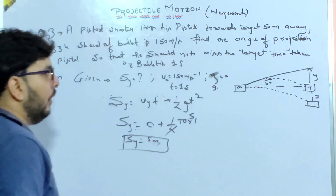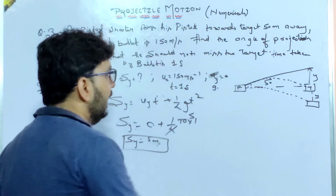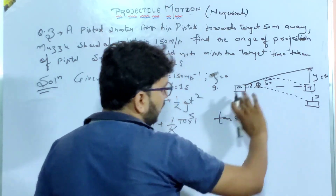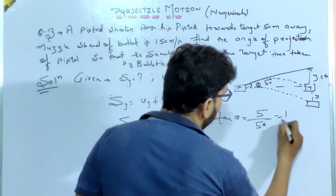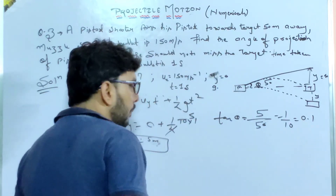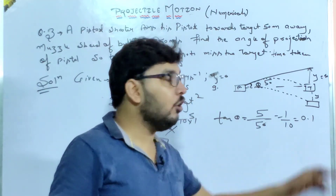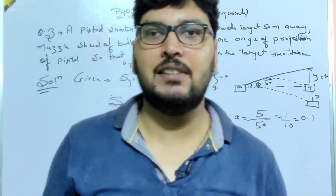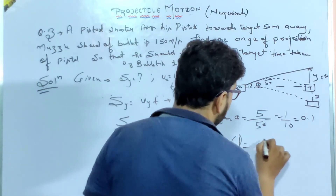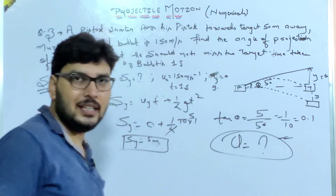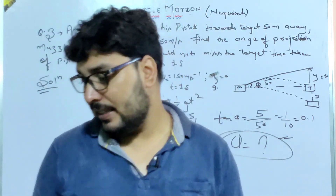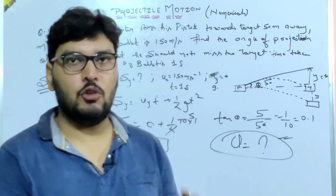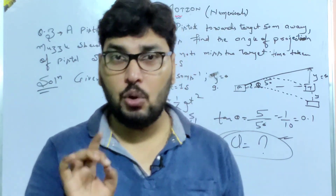So sy = 5 meters — you need to aim 5 meters above the target. Now, to find the angle θ: tan θ = perpendicular / base = 5 / 50 = 1/10 = 0.1. From the trigonometric table, find the angle whose tangent is 0.1 and write that as θ. With that, the numericals on projectile motion end. Solve the remaining calculations yourself and make sure to complete the answers.